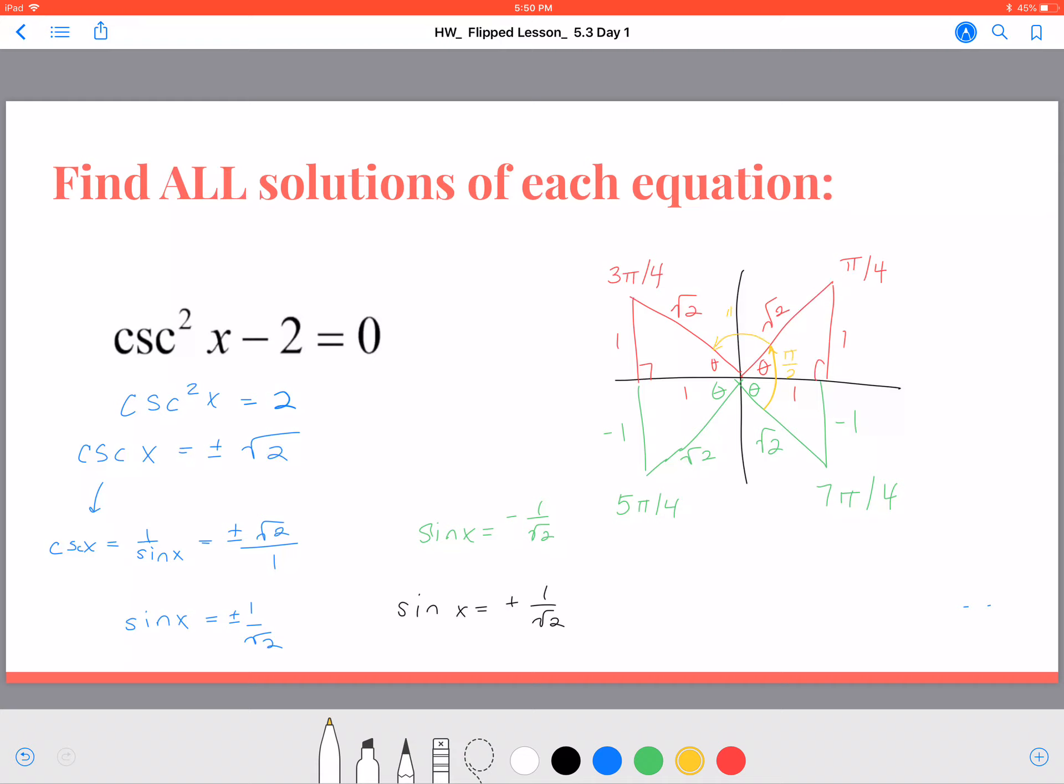Because they're evenly distributed here, I can instead write my solution as pi over 4 plus that pi over 2 now. That's the interval that we're doing those rotations.